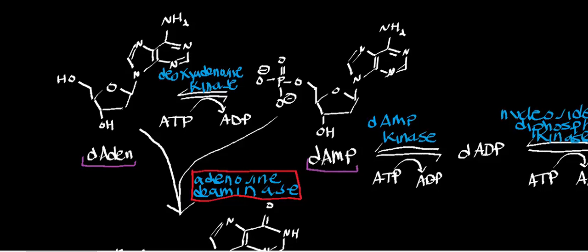To summarize, the four substrates adenosine deaminase can react with are: deoxyadenosine, adenosine, deoxy-AMP, and AMP. But what we're going to explore in this video is the big idea that when adenosine deaminase is deficient — when this enzyme is mutant — it somehow leads to production of deoxyadenosine triphosphate (deoxyATP), which allosterically turns off ribonucleotide reductase. That inner mechanistic step is often left out, and in this video we're going to understand exactly how that occurs.